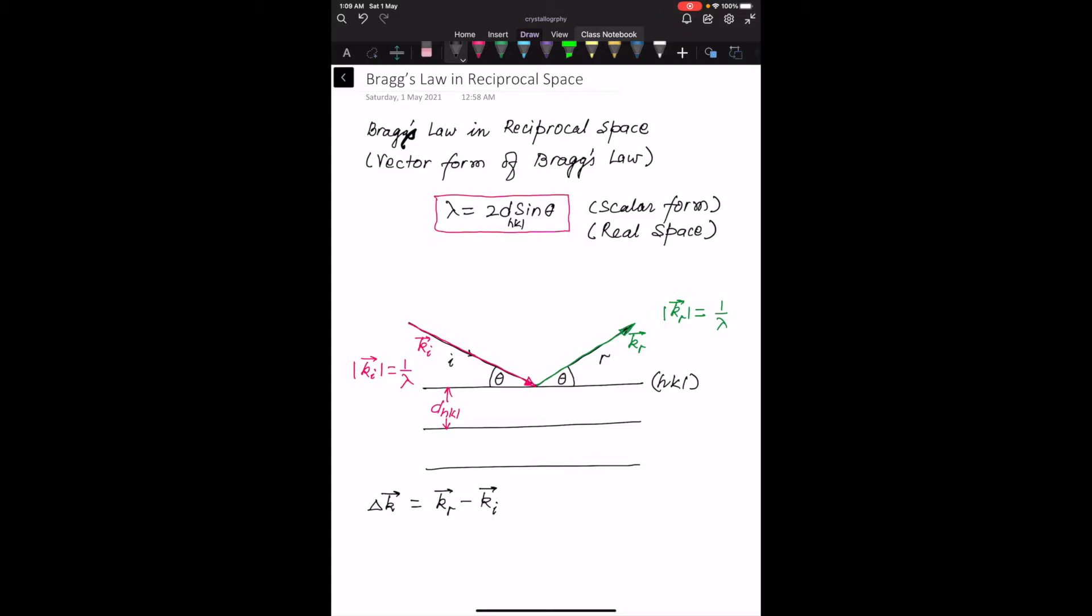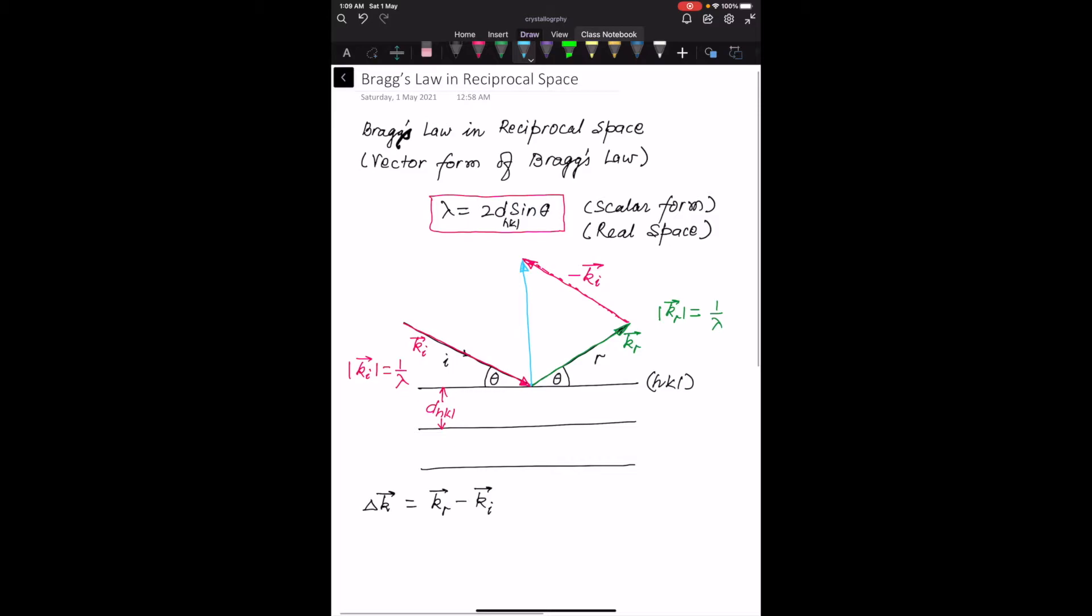To construct that geometrically, let us take a vector from here. I go parallel to Ki but in the opposite direction. This vector will be minus Ki. By the triangle law of vector addition, I get delta K vector as this vector. This will be my delta K, Kr minus Ki.